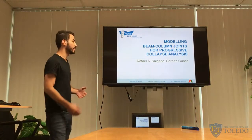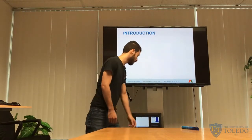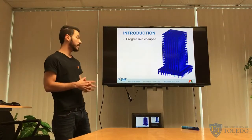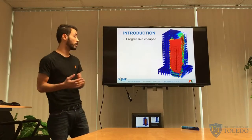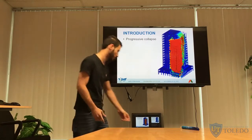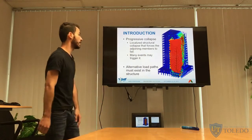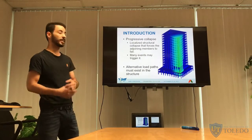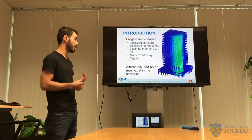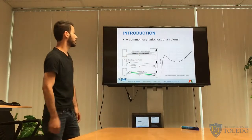My name is Rafael and I'll present a study called Modeling Beam-Column Adjoints for Progressive Collapse Analysis. Progressive collapse is the failure of a localized member that pushes the adjoining members to fail as well, which may cause the structural collapse or at least a large portion of the structure. Many events may trigger this, like fire, blasts, and terrorist attacks, and the way to mitigate such catastrophic failure is to have alternative load paths on the structure.